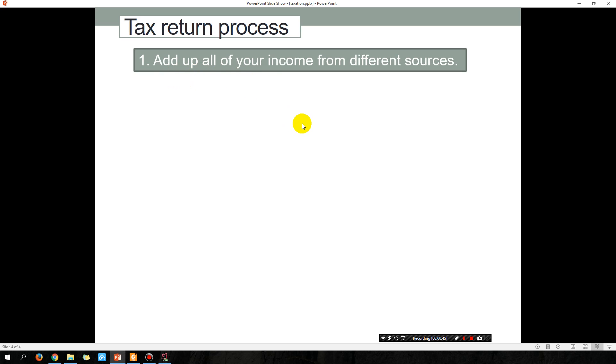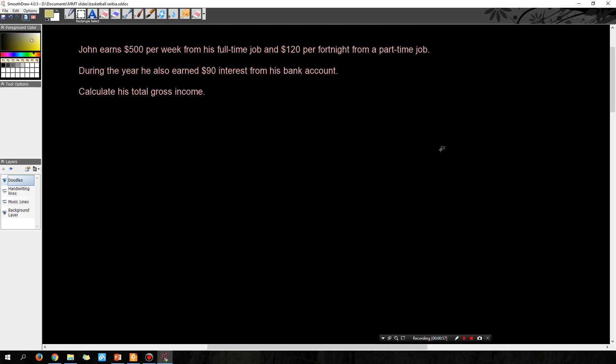The first step is to list the different sources you have and calculate exactly how much income you have. Let's do an example. Let's say John earns $500 per week from his full-time job and $120 per fortnight from a part-time job.